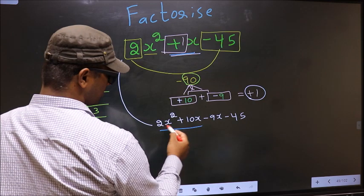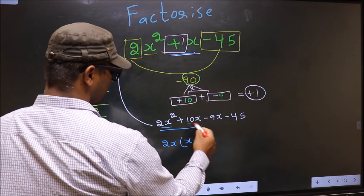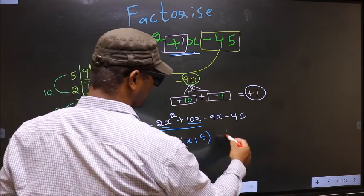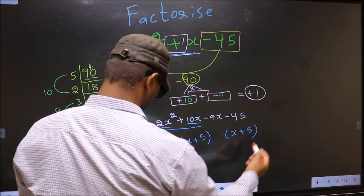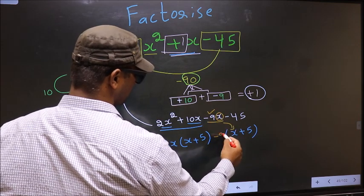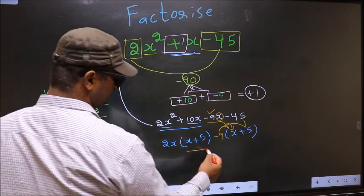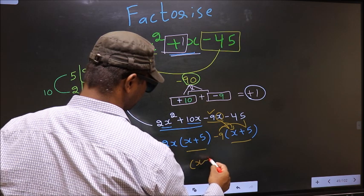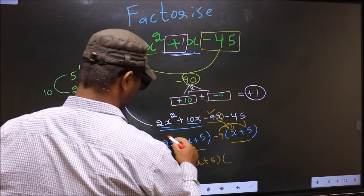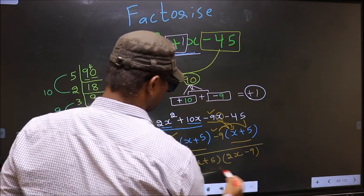From the first two terms, 2x² + 10x, the common factor is 2x. Taking 2x out, we get x + 5. From the last two terms, -9x - 45, taking out -9 gives us x + 5 as well. Now take out (x + 5) as common, giving the final answer: (x + 5)(2x - 9).